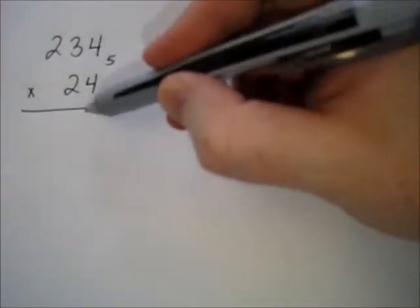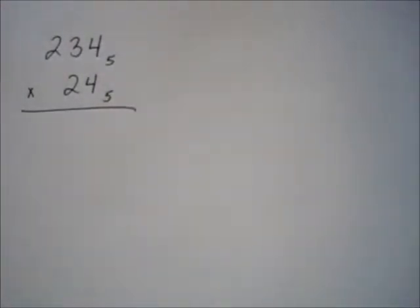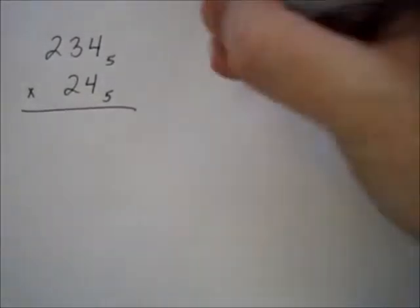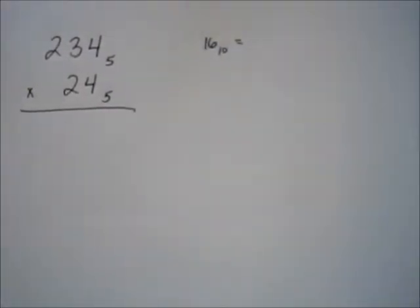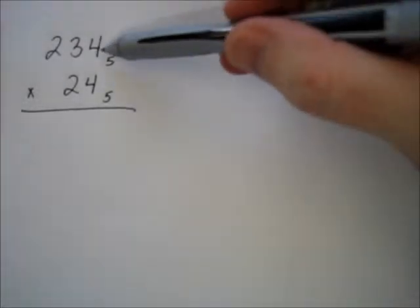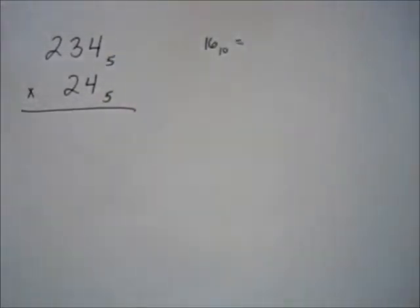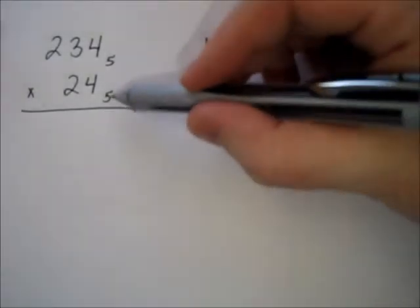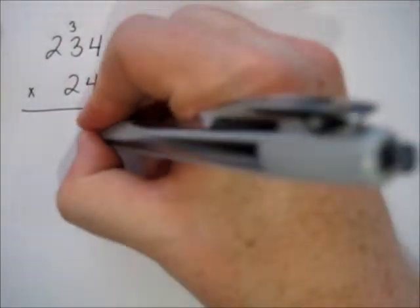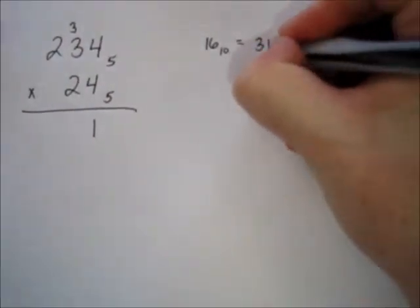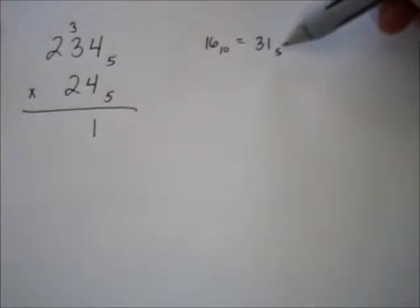You'd start out: four times four is sixteen. What you have to prevent yourself from doing is writing a six and carrying the one, because you're in base five. The way to represent sixteen in base five — the easy way to figure this out — is: how many fives go into sixteen? The answer is three with one left over, so sixteen is represented as three-one in base five.